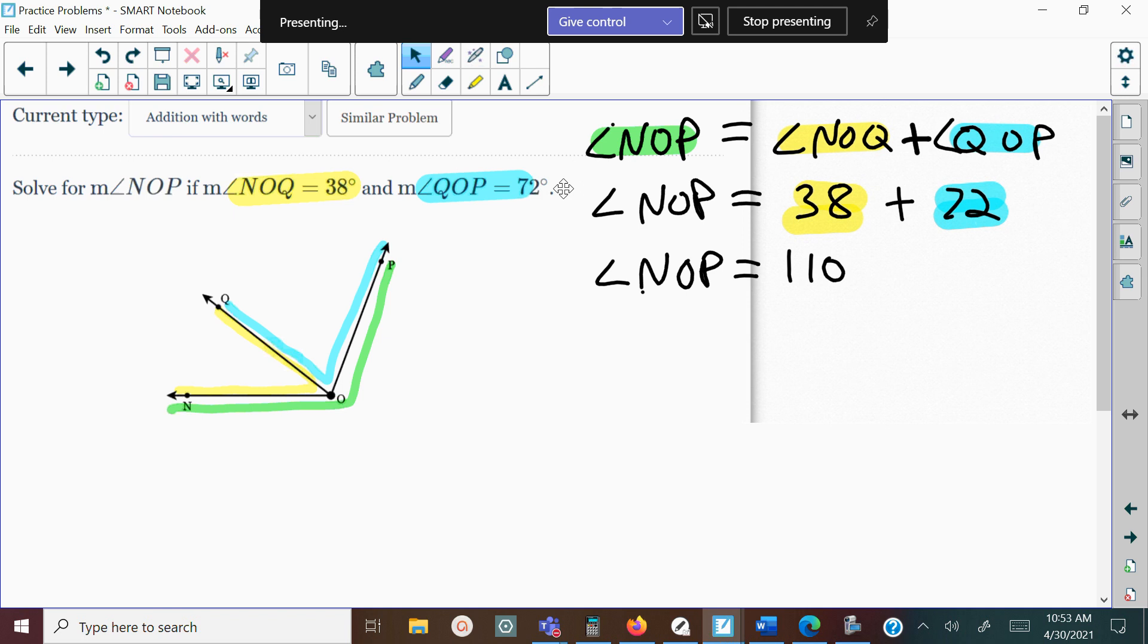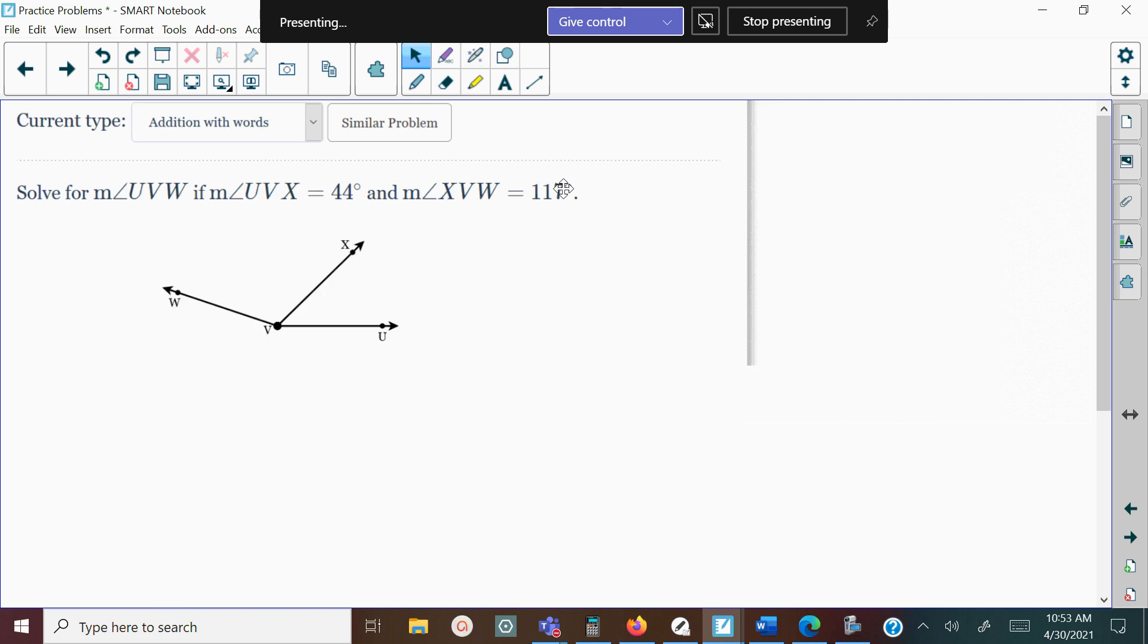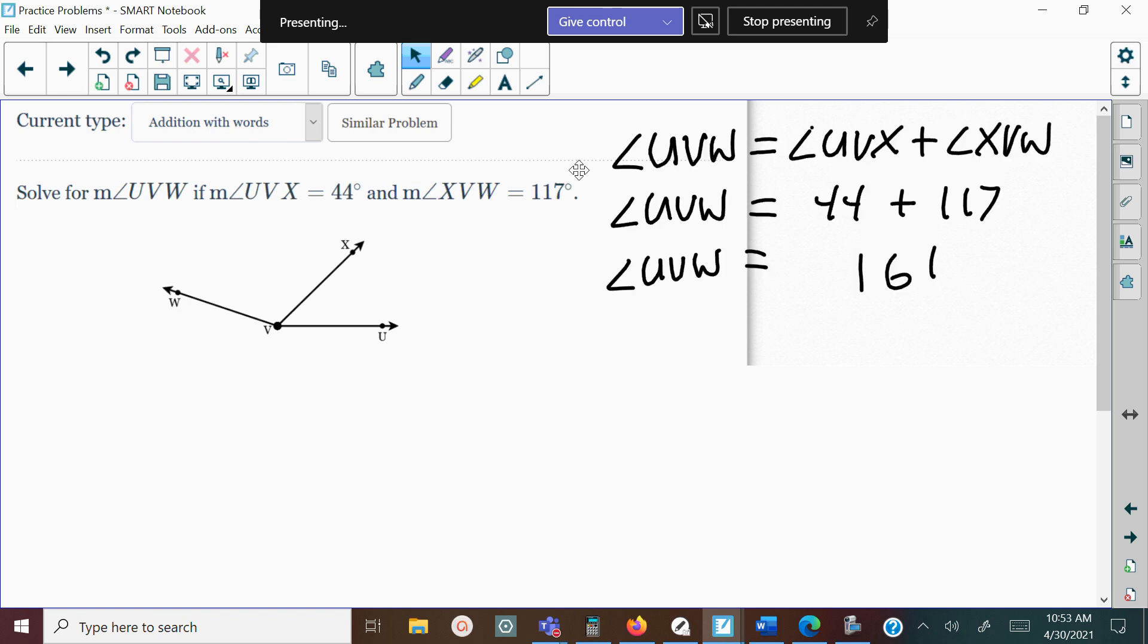Let's take a look at another example. You can pause the video here and see if you can solve this on your own. Let's see what you should get. The angle measurement should be 161. Angle UVW is the bigger angle, and the other two angles add up to equal it.